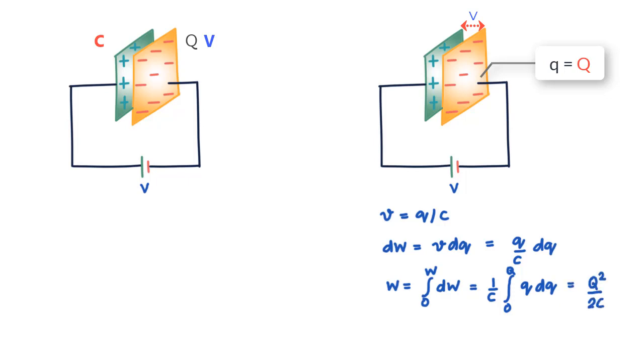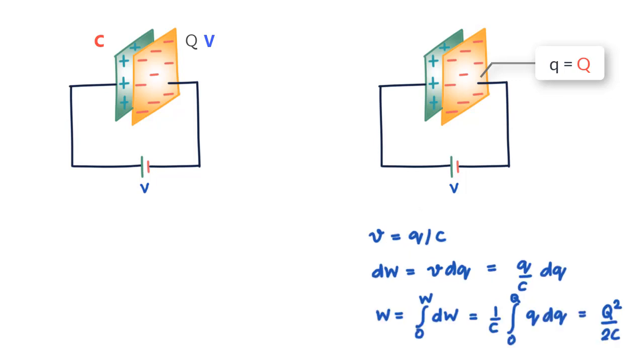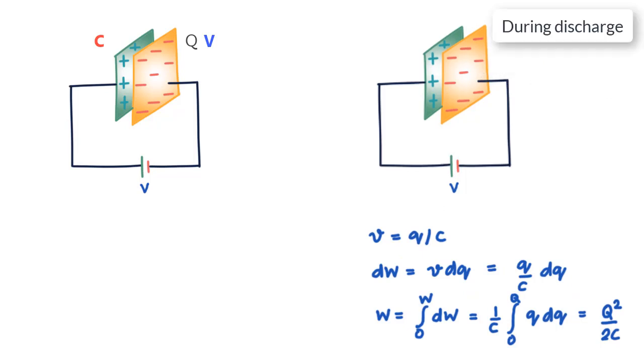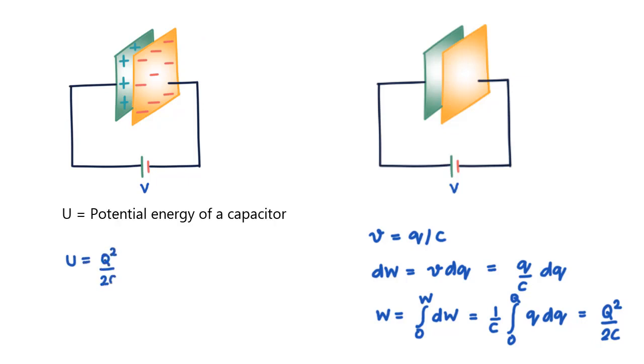When you discharge this capacitor by using it in some application, say a flash bulb, this is the work done by the electric field on the charge. During discharge, the q value reduces from Q to zero. If you recall that work done appears as stored potential energy, we can say that W = U = Q²/2C, which can also be written as ½CV² or ½QV.